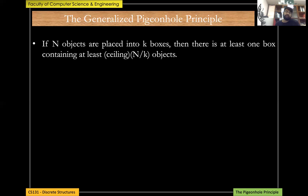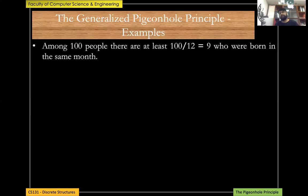Now let's talk about the generalized pigeonhole principle. If n objects are placed into k boxes, then there is at least one box containing at least ⌈n/k⌉ objects — that is, the ceiling of n divided by k. Let's see some examples to understand this better.